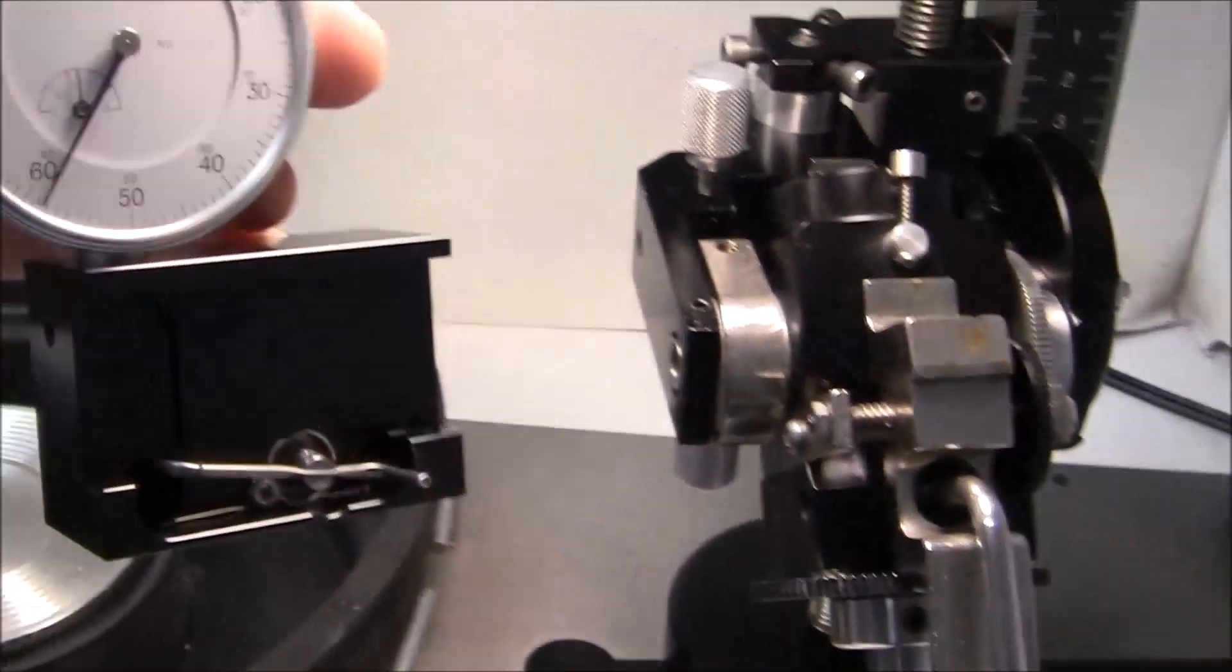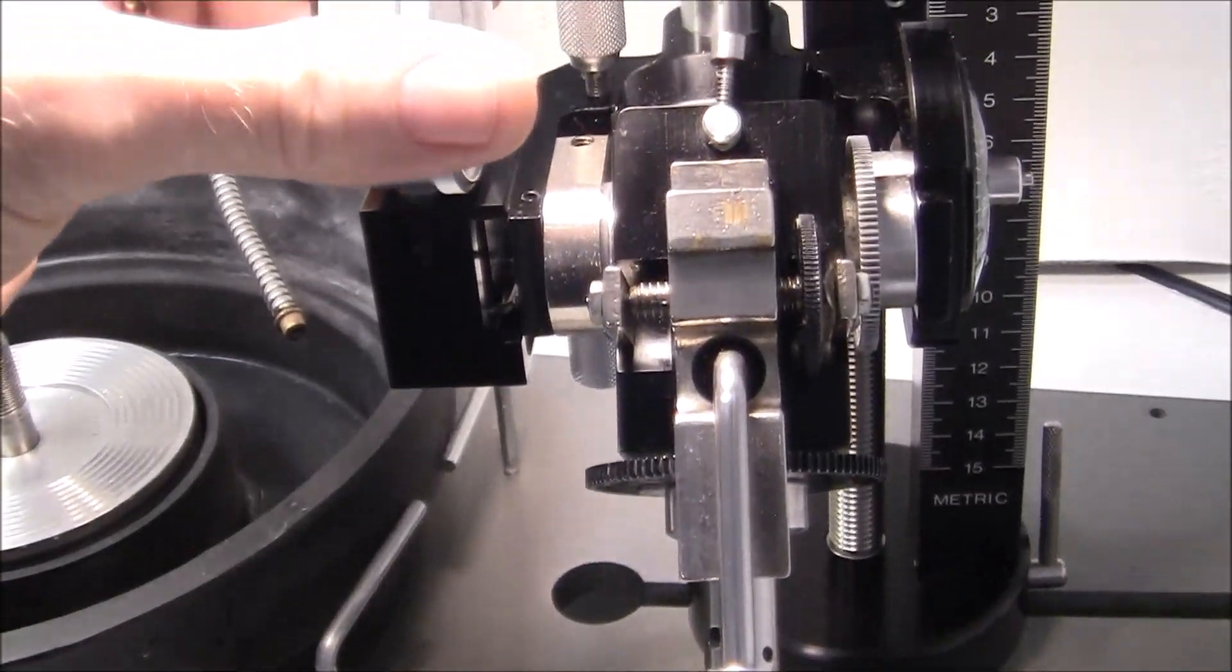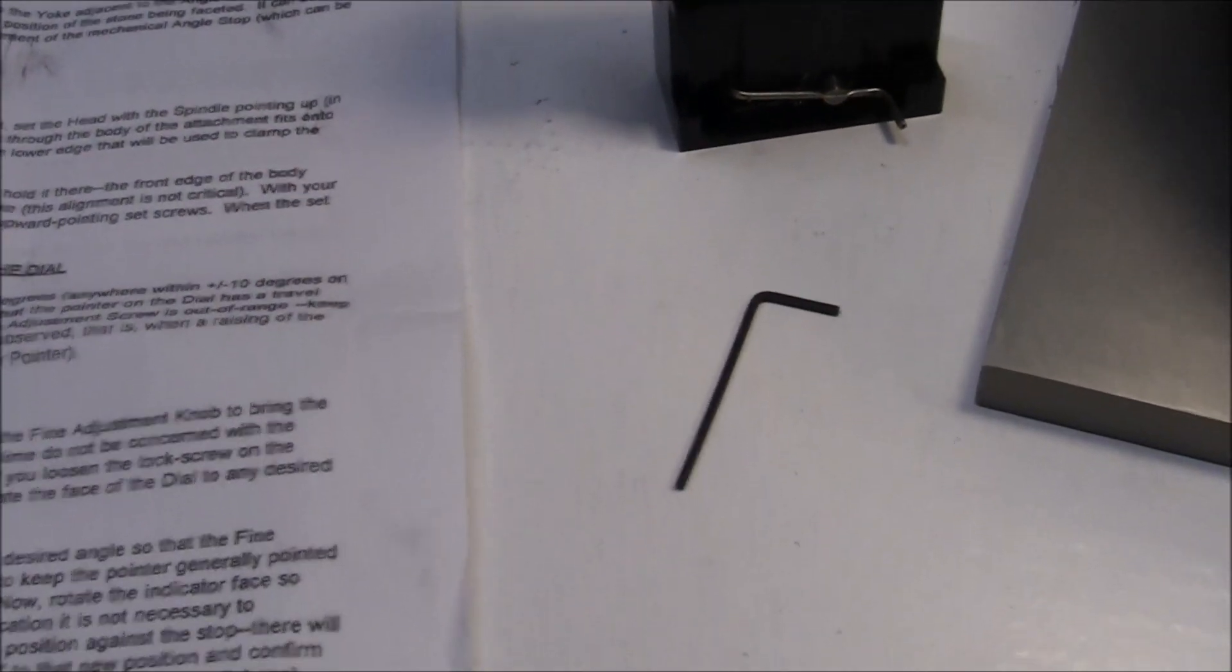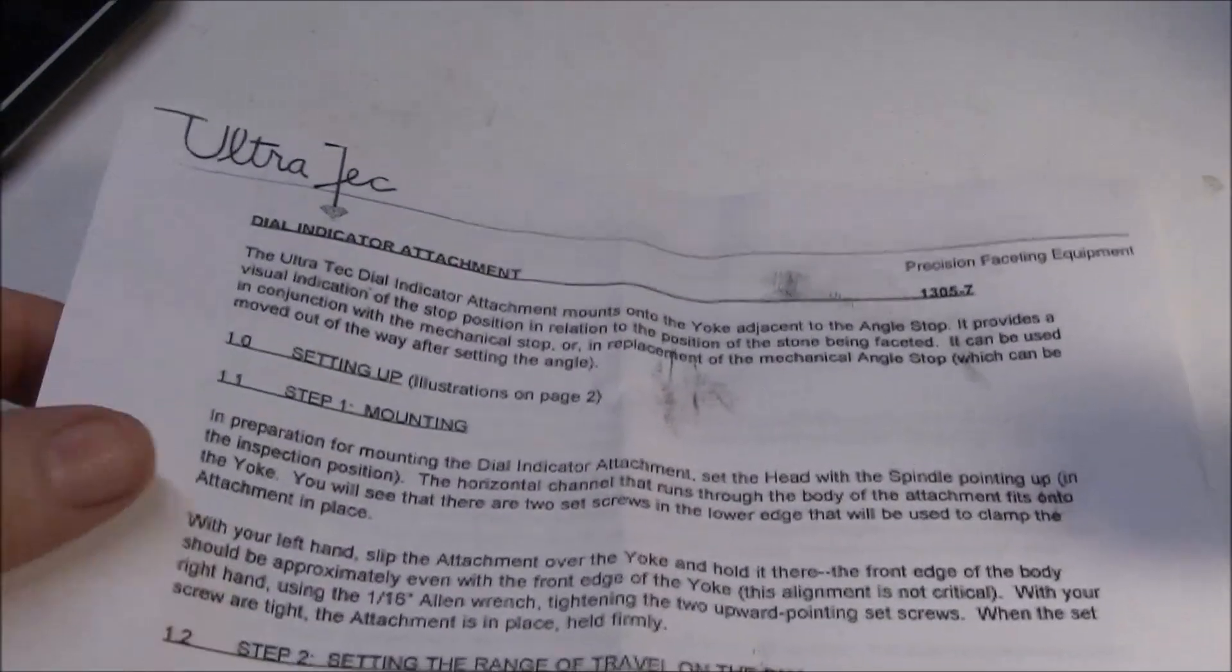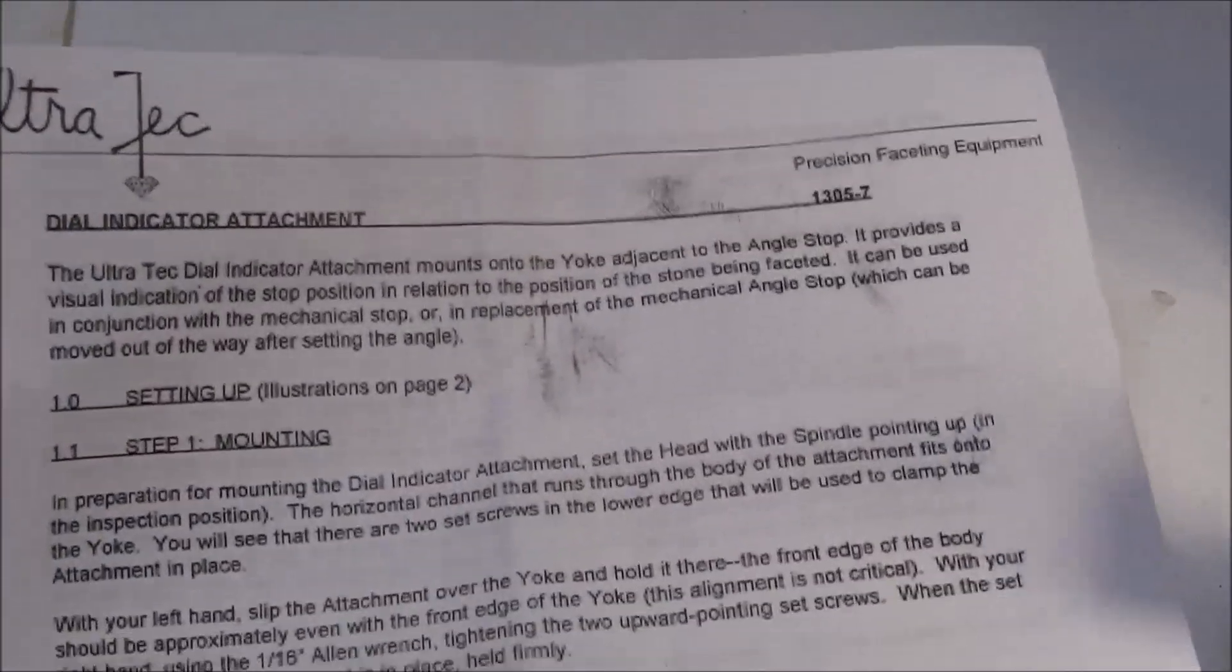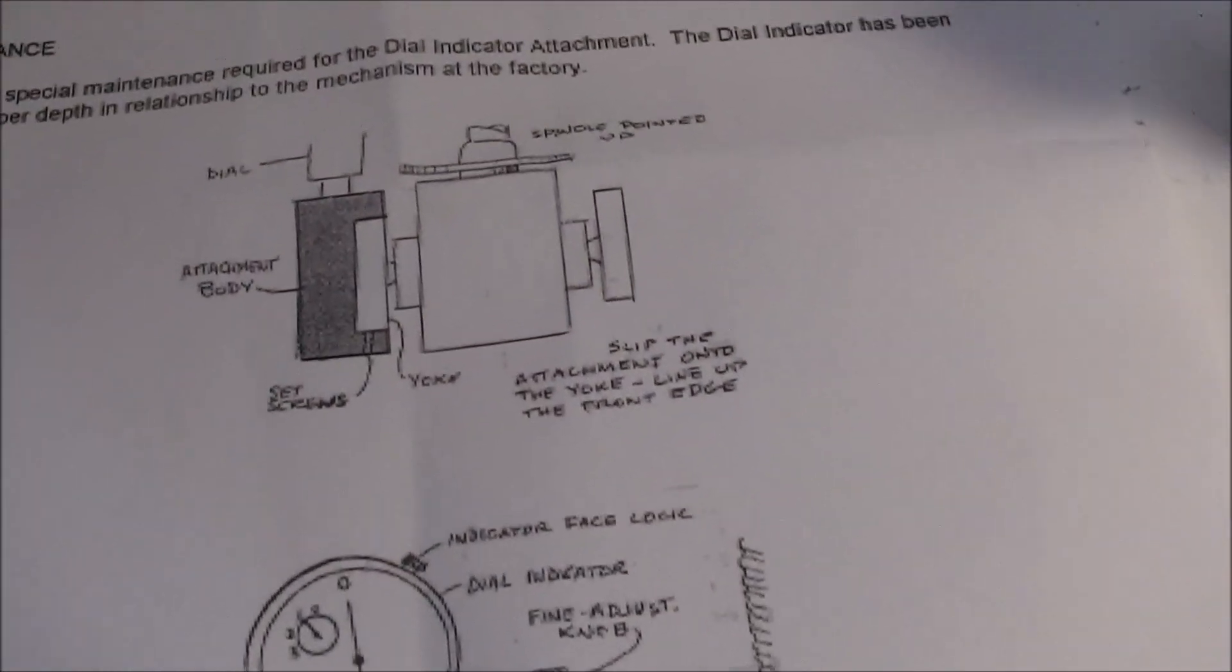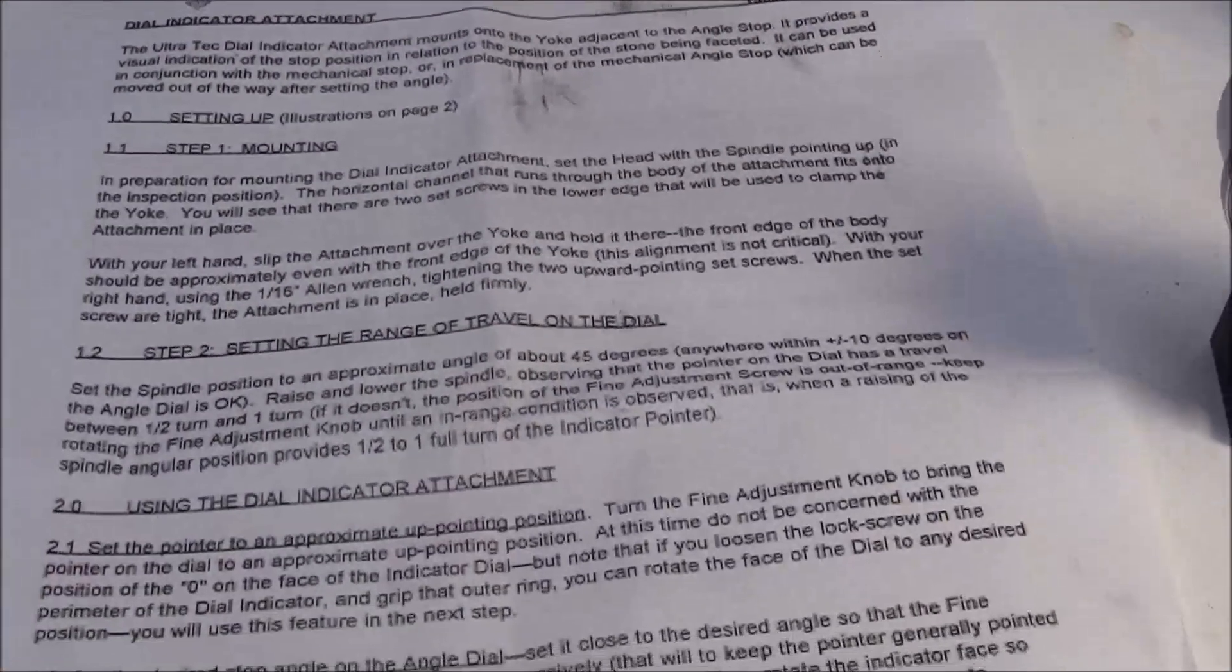The gauge will mount right here on the machine. A wrench, an Allen wrench and an instruction sheet is provided by Ultratech. So I'm going to get started putting this on.